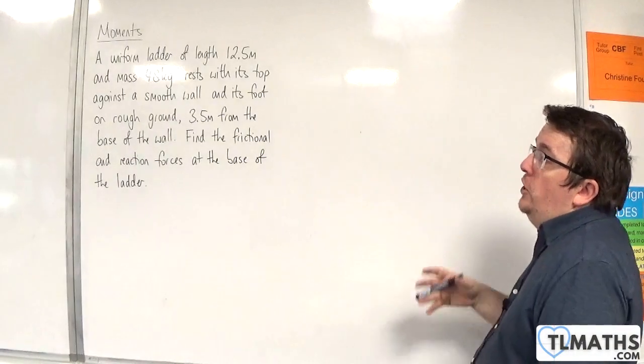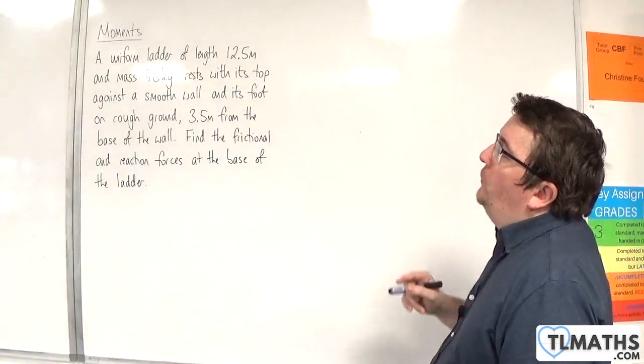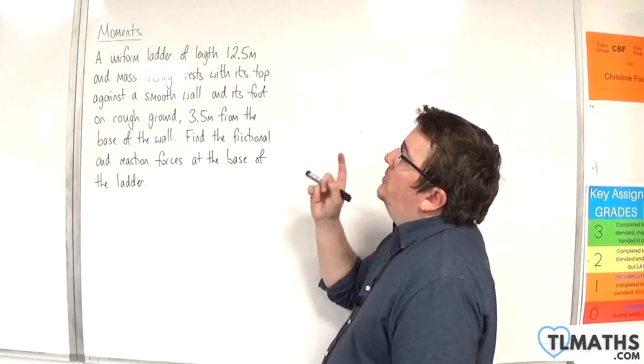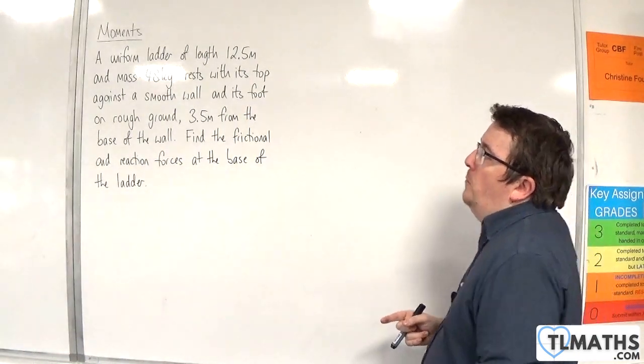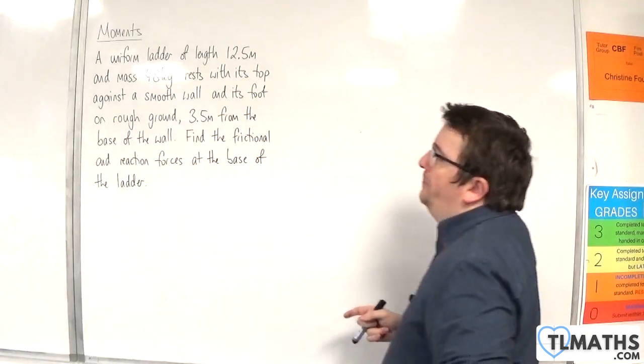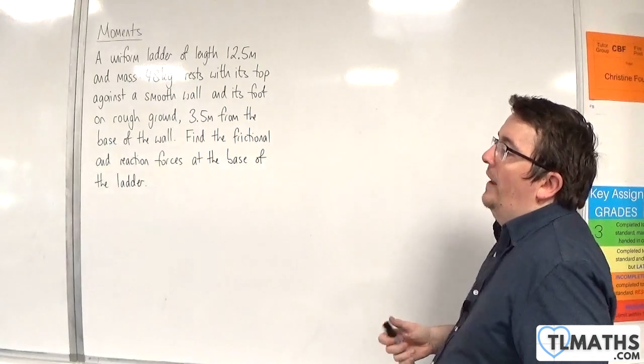So in this video, we have a uniform ladder of length 12.5 meters and mass 48 kilos rests with its top against a smooth wall and its foot on rough ground, 3.5 meters from the base of the wall. Find the frictional and reaction forces at the base of the ladder.